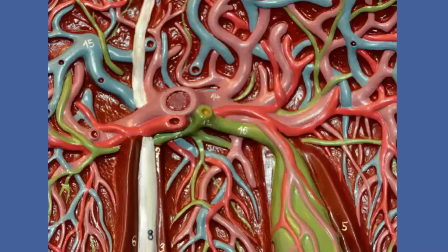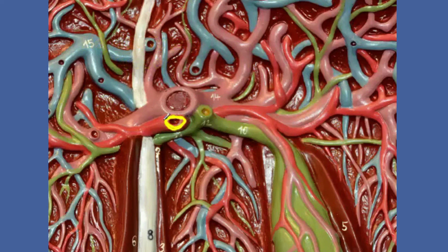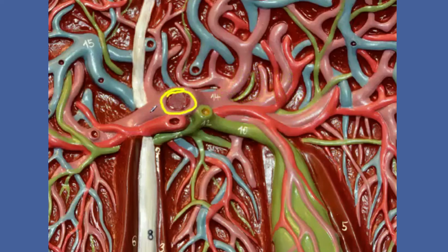Here is the hepatic artery proper — it is providing oxygenated blood to the liver. Here is the cut stump of it just before it enters the liver. This larger vessel right over here is the hepatic portal vein. You can see it has a purplish color because it is bringing blood from mostly the abdominal organs to the liver.